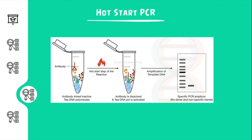In the automated method, antibodies specific to the Taq polymerase are seen bound to the Taq polymerase. This deactivates the Taq until 72 degrees Celsius is reached. After 72 degrees Celsius, the antibody is degraded allowing the Taq to function. Different Taq DNA polymerases with antibodies or ligands are commercially available, for example, AmpliTaq Gold DNA polymerase, TaqStart, Platinum Taq polymerase, etc.